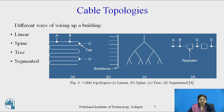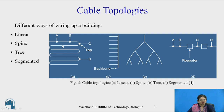This diagram shows all four types of topologies. The first topology, figure A, shows the linear topology. In this topology a single cable is snaked from room to room and stations A, B and C are tapping over the cable.